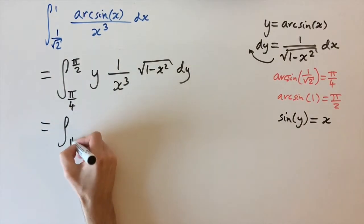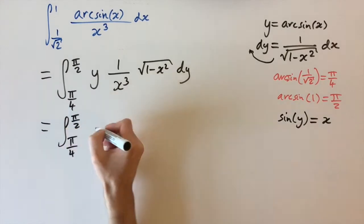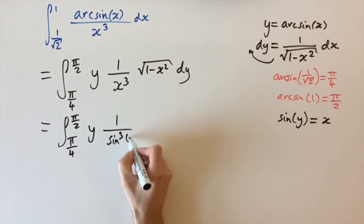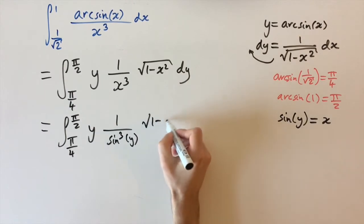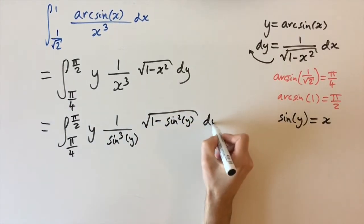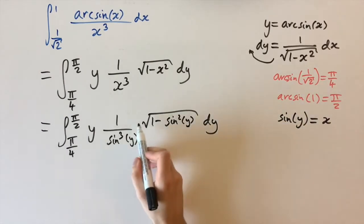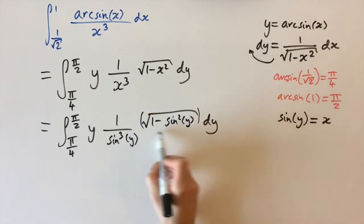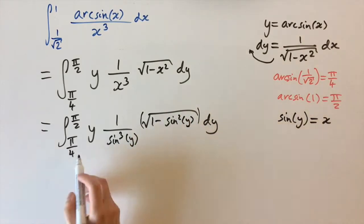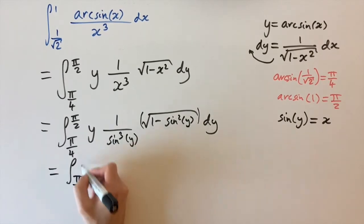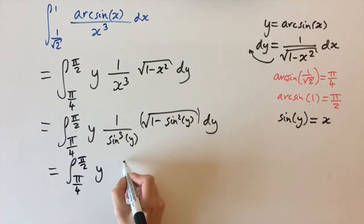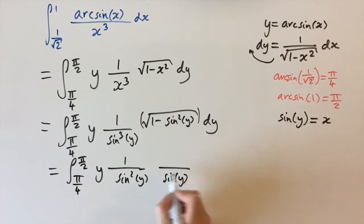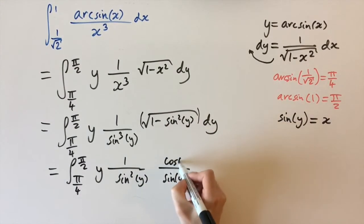The integral from pi over 4 to pi over 2 becomes y times 1 over sine cubed of y, times the square root of 1 minus sine squared of y, dy. Using the Pythagorean identity, the square root of 1 minus sine squared of y simplifies to cosine of y. Regrouping, we have y over sine squared of y, times cosine of y over sine of y.